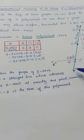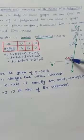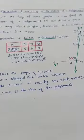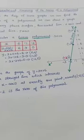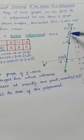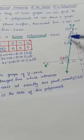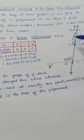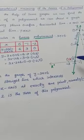That means negative 2 is the zero of this polynomial. You can cross-check it: substitute negative 2 in place of x, and y becomes 0. That confirms negative 2 is the zero of this polynomial.